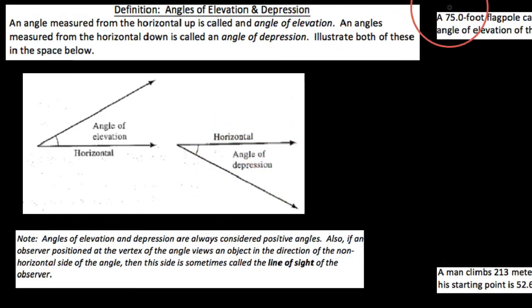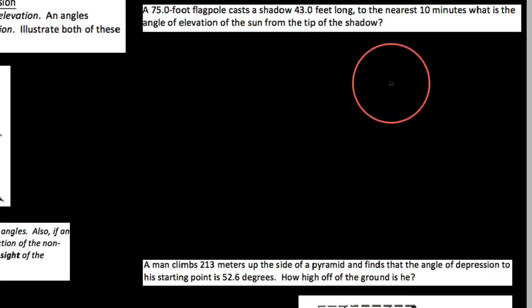So I'm going to do a couple of examples really quickly here. The first one, I have not provided us with a diagram, but that's okay. A 75-foot flagpole casts a shadow 43 feet long, to the nearest 10 minutes, what is the angle of elevation of the sun from the tip of the shadow? Maybe we won't go to the nearest 10 minutes, how about we go nearest degree? But the fact of the matter here is this, we need to conceive of this situation, so let's go ahead and start with this.